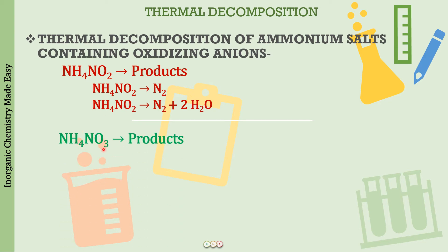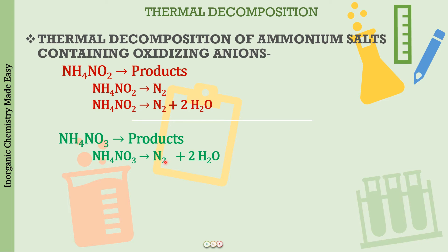Now ammonium nitrate — the exception. Nitrate is an oxidizing anion but it releases N2O instead of N2. Here's how to remember it: write N2 first, then count 4 hydrogens to form 2 water molecules. After removing these, one oxygen remains — attach it to N2 to get N2O. So ammonium nitrate on heating gives N2O plus 2H2O.